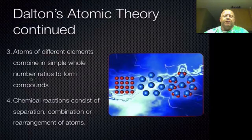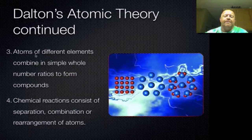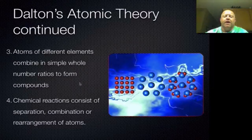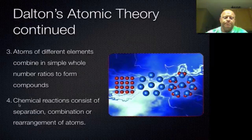Parts 3 and 4 still hold true to everything we believe today. Atoms of different elements combine in simple whole number ratios to form compounds — basically, he's saying that to make compounds you can't use half an atom; you have to use whole number ratios. And then, chemical reactions consist of the separation, combination, or rearrangement of atoms.